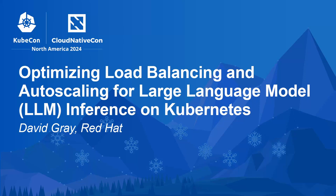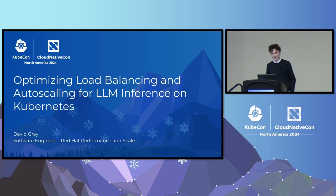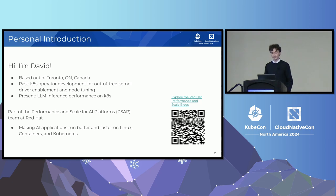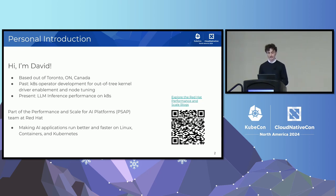My talk is called 'Optimizing Load Balancing and Autoscaling for LLM Inference on Kubernetes.' I'm David, a performance engineer at Red Hat based in Toronto, Canada. A couple of years ago I was working on Kubernetes operator development for out-of-tree kernel driver enablement and node tuning, but for the last almost two years I've been focused on LLM inference performance on Kubernetes. I'm part of the performance and scale for AI platforms team at Red Hat, and our mission is to make AI applications run better and faster on Linux, containers, and Kubernetes.